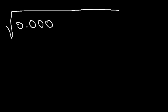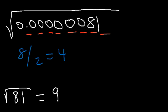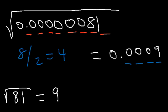Now what about the square root of 0.000081? First, let's find the square root of 81. We know that 9 times 9 is 81, so the square root of 81 is 9. Now how many digits do we have to the right of the decimal point? We have 8 digits. 8 divided by 2 is 4, so our final answer should have 4 digits to the right of the decimal point — it's going to be 0.0009. The square root of that number is indeed 0.0009.